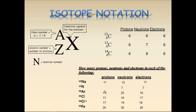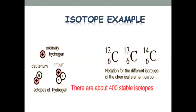An example of carbon isotopes is shown in the slide. For sodium, nitrogen, argon, chlorine, and iron, the values of proton, neutron, and electron numbers are calculated. There are about 400 stable isotopes in nature.